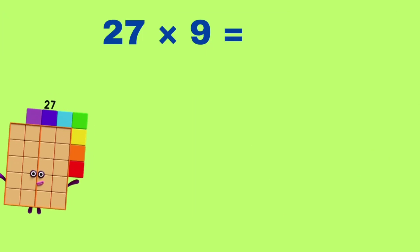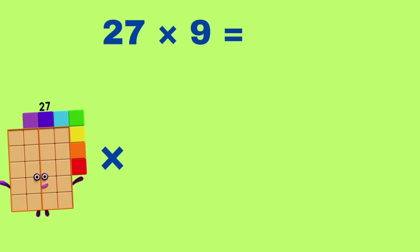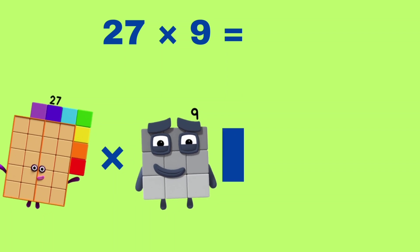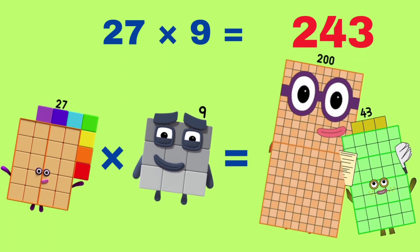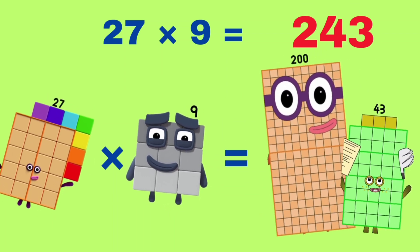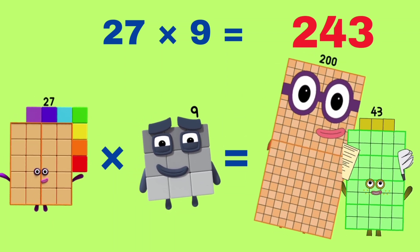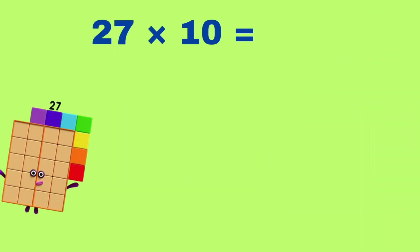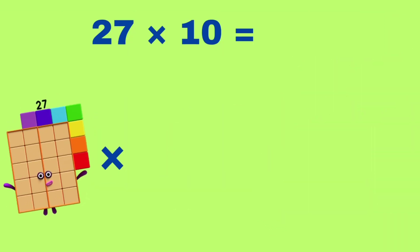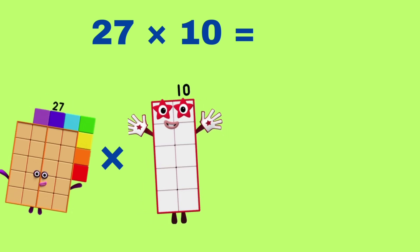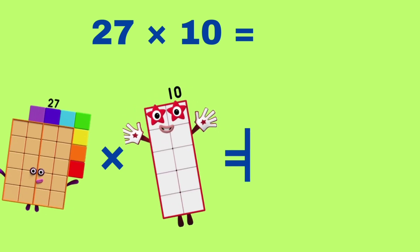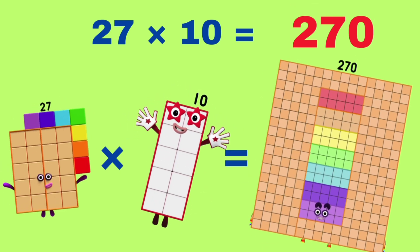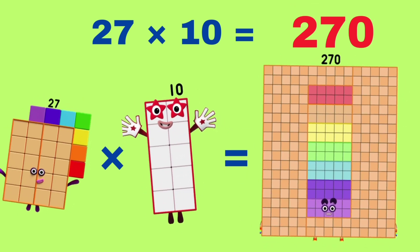27 multiplied by 9 is equals to 243. 243. 27 multiplied by 10 is equals to 270. 270.